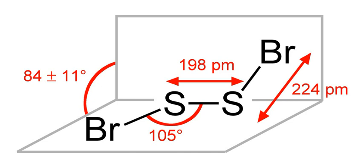It is a toxic, orange-yellow liquid that smokes in air due to the reaction with water vapor. In the presence of moisture, disulfur dibromide reacts violently with oxidants, releasing bromide anion and sulfur oxides. In general, its reactivity resembles that of disulfur dichloride.